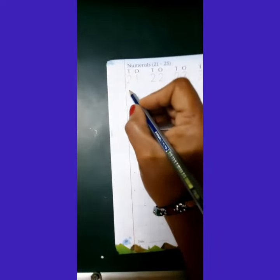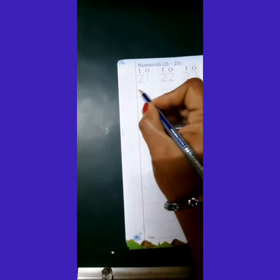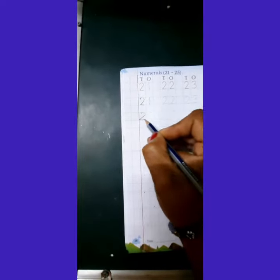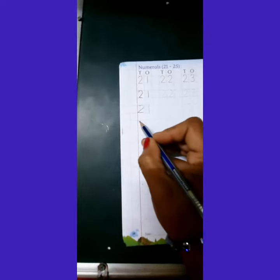Now children, we will write the number 21, like this, on the dot, inside the box, 21.